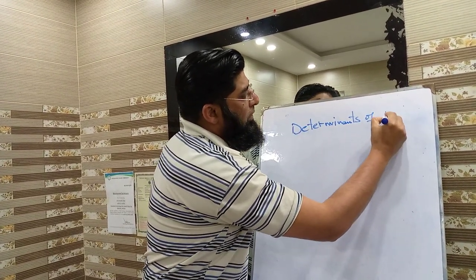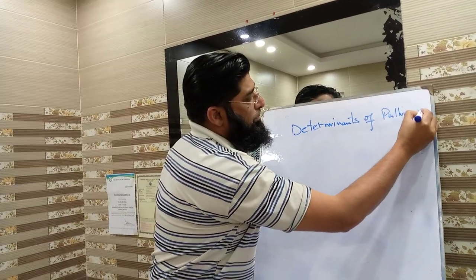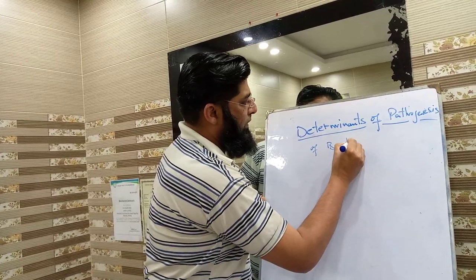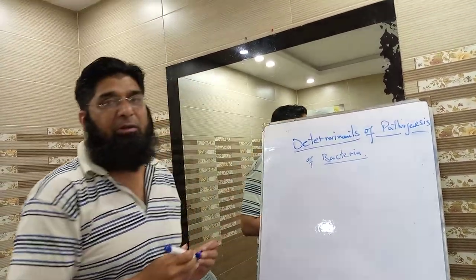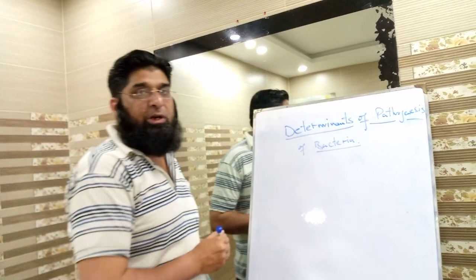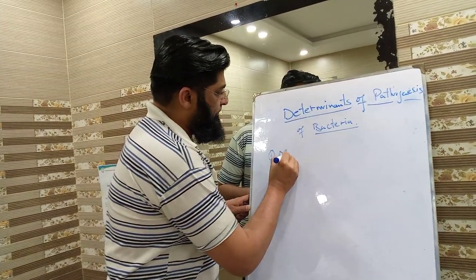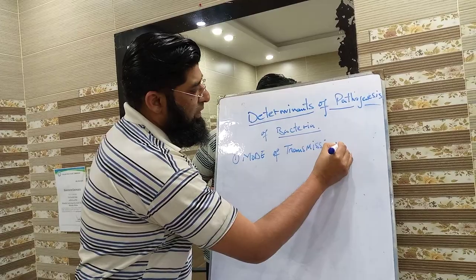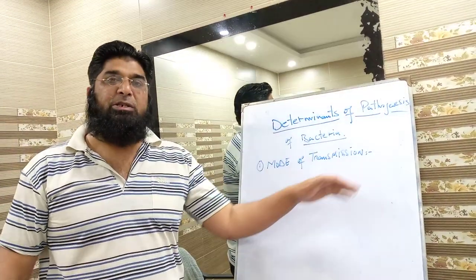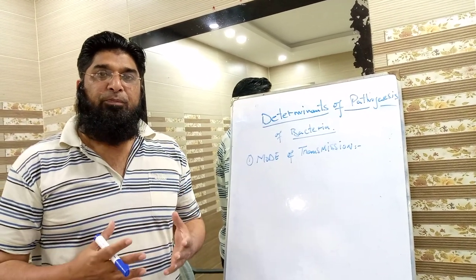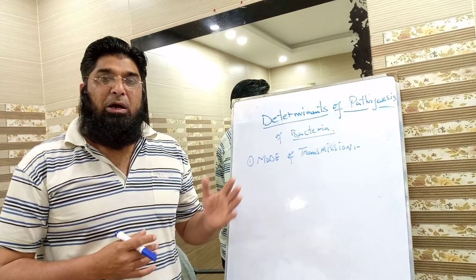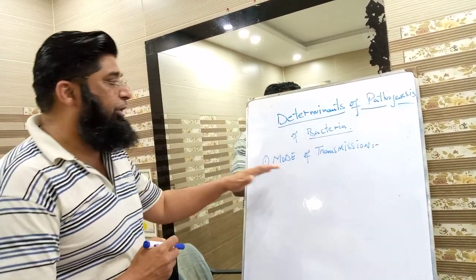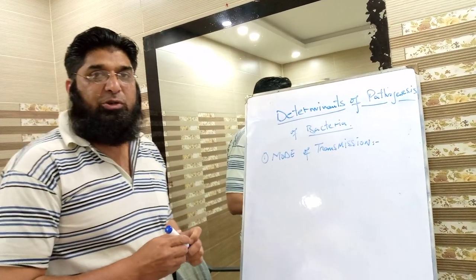Determinants of pathogenesis of bacteria. I will be discussing these factors one by one. Number one, the most important is mode of transmission. Mode of transmission means the mechanism, the route, the process through which bacteria or infecting microorganisms cause infection in the host. We have different modes of transmission of bacteria which cause disease in the host.